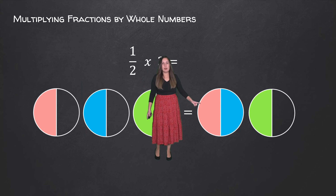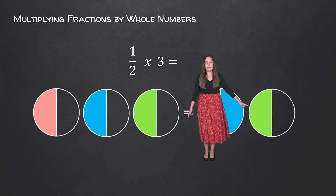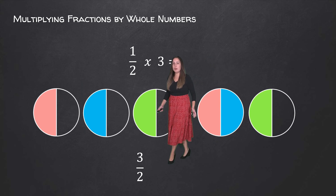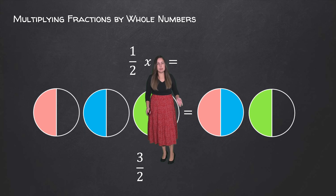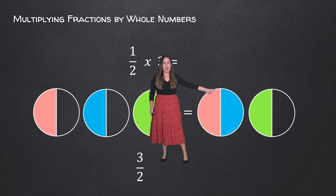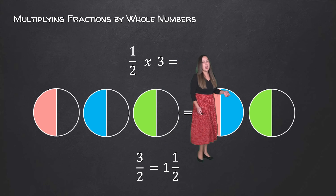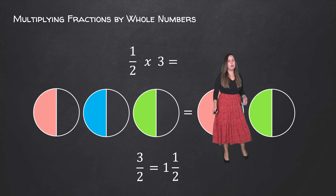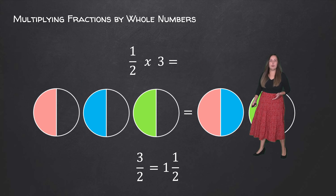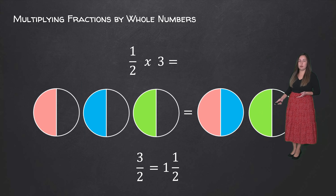So we have one half, two halves, and three halves. In total we have three shaded pieces out of two equal parts, which will be equal to one and a half because we have one fully shaded circle and half a circle here.